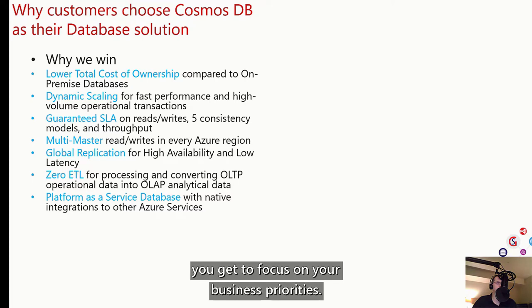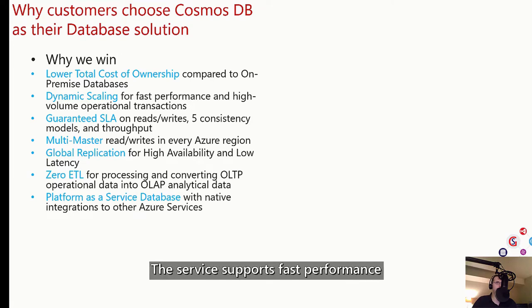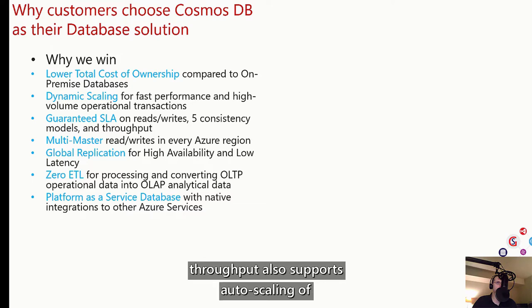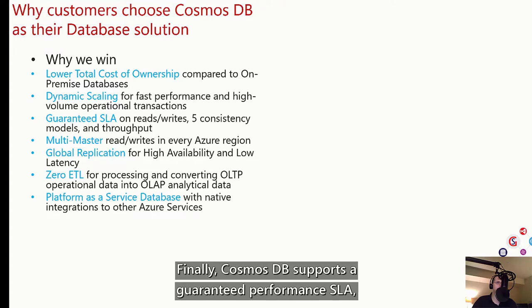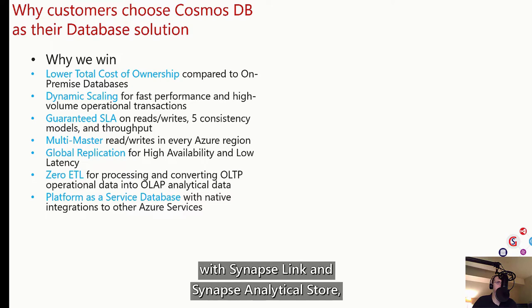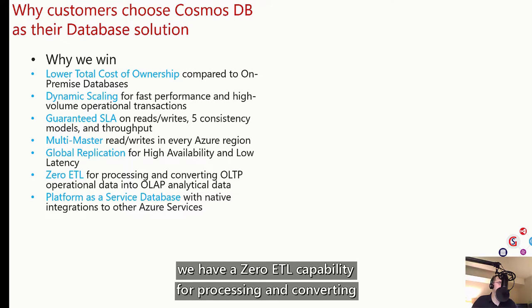When we do that management work, you get to focus on your business priorities. Second, Cosmos DB enables dynamic scaling based on traffic patterns. The service supports fast performance for high volumes of transactions. In addition to manually provisioned throughput, it also supports auto-scaling of throughput to your level of utilization. Finally, Cosmos DB supports a guaranteed performance SLA, multi-master reads and writes, global replication, and now with Synapse Link and Synapse Analytical Store, we have a zero ETL capability for processing and converting OLTP operational data into the OLAP Analytical Store.